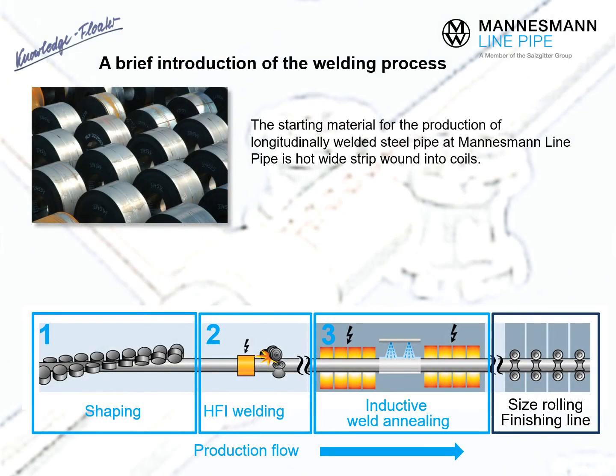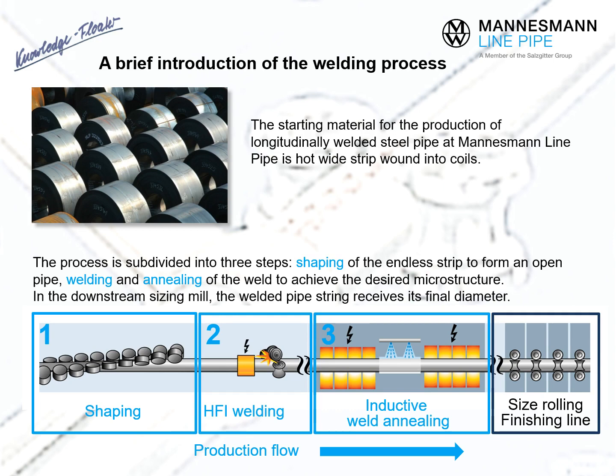A brief description of the welding process. The starting materials for the production of longitudinally welded steel pipe at Mannesmann Linepipe are hot wide strip coils of a suitable width. The process is subdivided into three steps: shaping of the butt welded endless strip to form an open pipe, the actual welding process and annealing of the weld to obtain the desired microstructure, followed by size rolling to the final diameter, finishing and final inspection.